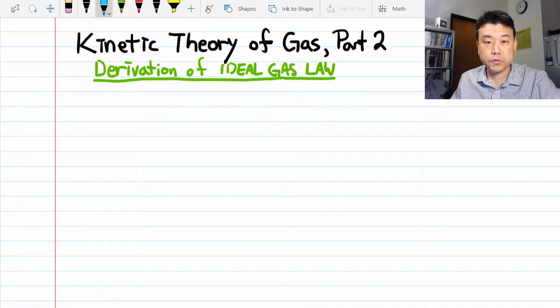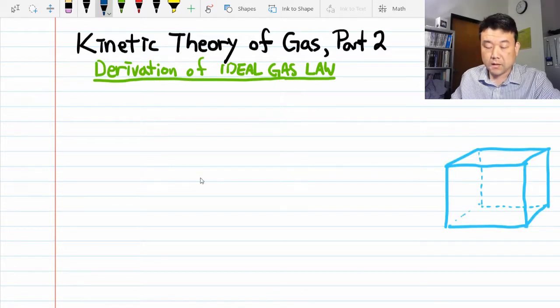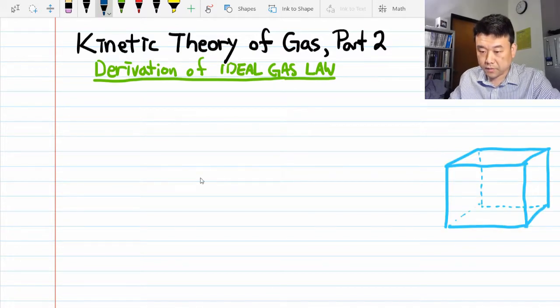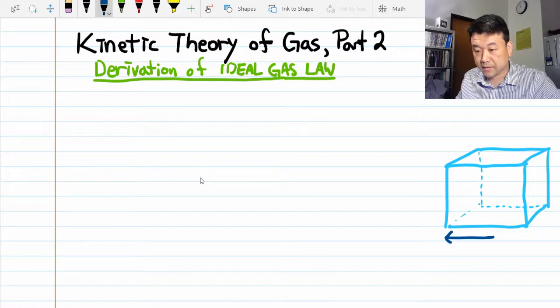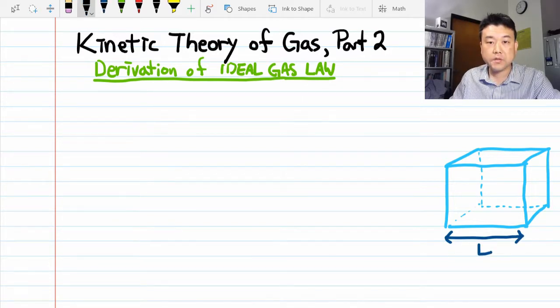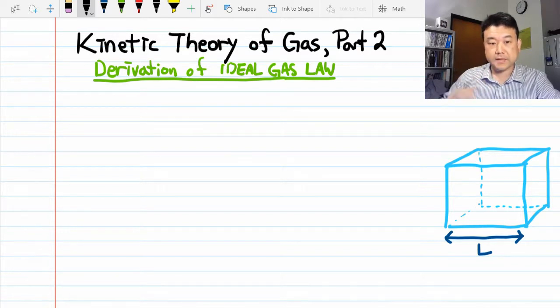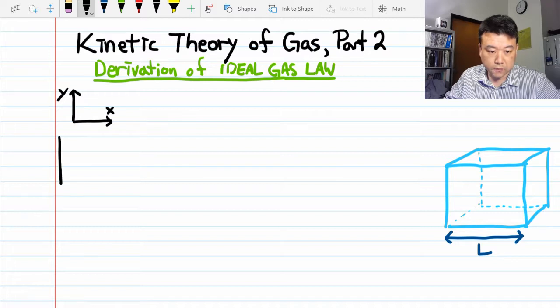So to set up our derivation, I'd like to consider a cubic volume like this. Let's say that a side of this cubic volume is length L. So imagine looking at this cubic volume straight along the z-axis from the positive z-axis. These are the walls of the cubic volume.